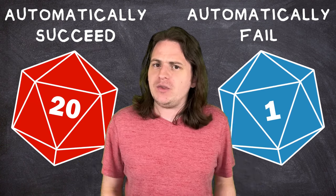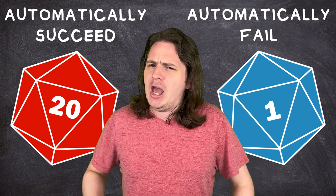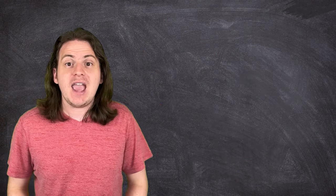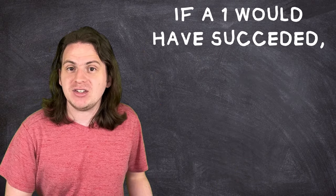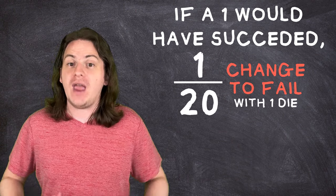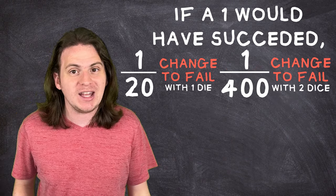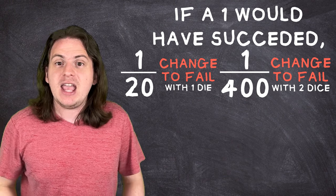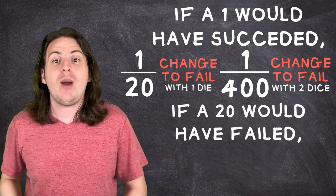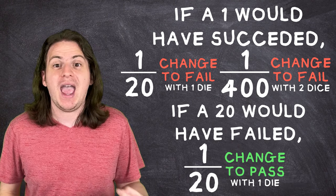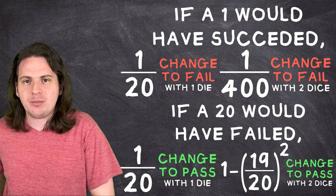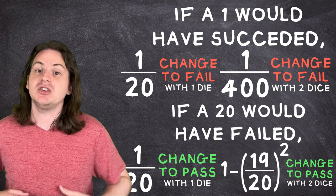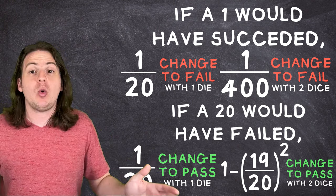Now for the most part, even without this rule, unless the difficulty is insanely high, you're probably going to pass with a 20 anyway. But there are a few outliers where this would matter. In any case where a one would have otherwise passed, you now still have a one in 20 chance of failing for a normal roll or a one in 400 chance when rolling with advantage. Since you always take the highest, then both dice would need to be one. And in a case where a 20 would have otherwise failed, you now have a one in 20 or 5% chance of passing anyway on a normal roll or a 9.75% chance of passing with advantage, which you can get from this formula for the odds that at least one of the dice is a 20. In all other cases, we can use the same equation from before.